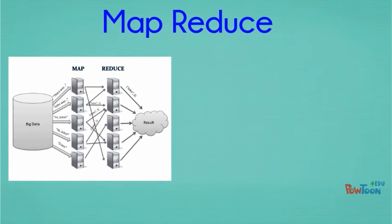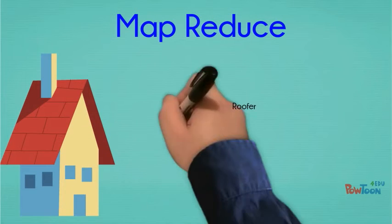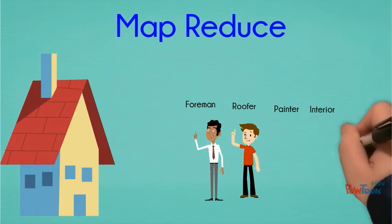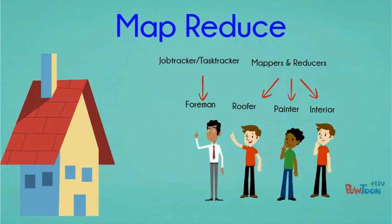MapReduce is a system used to efficiently process the large amount of data Hadoop stores in HDFS. Its strength lies in the ability to divide a single large data processing job into smaller tasks. Once the tasks have been created, they are spread across multiple nodes and run simultaneously, and the reduce phase combines the results together. The entire MapReduce job is the equivalent of building a house — each job is broken down into individual tasks and assigned to various workers as mappers and reducers, with completing each task resulting in a single combined output.